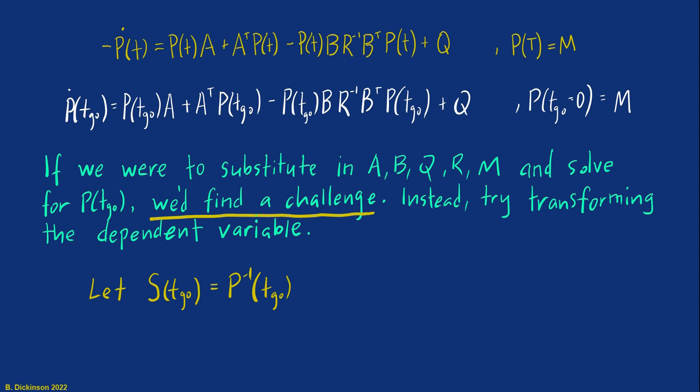And one trick when working with Riccati equations is to introduce a new variable. We're going to essentially transform the dependent variable in this by assigning the inverse of P to the new variable S. Their product is identity, and the derivative of their product is zero. And from that we have this formula, which will be handy, as you'll see.